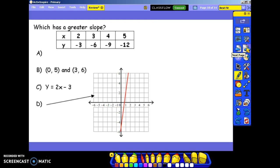Which has the greater slope? Well, for a table, we subtract our y's over our x's, negative 6 minus negative 3, over 3 minus 2. When we do the additive inverse, that gives us negative 3 over 1, which is negative 3.